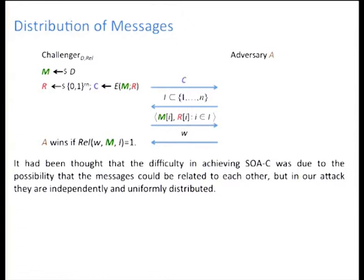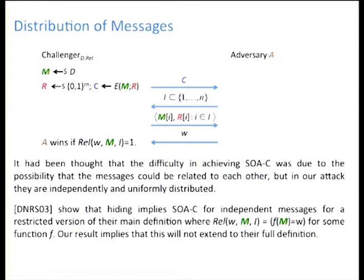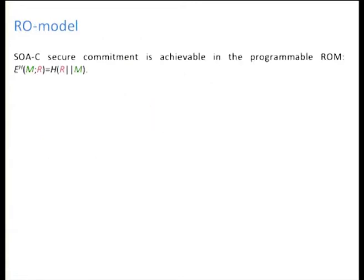It was believed that the difficulty of achieving selective open security was due to the fact that messages could be related to each other. But in our case they are not. It was proved before that for independent messages, hide-and-bind security implies selective open security, but only in a restricted version of this security definition. Our result implies that this cannot be extended to the full definition, so there is no contradiction.